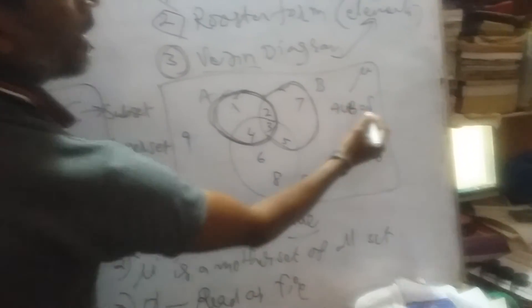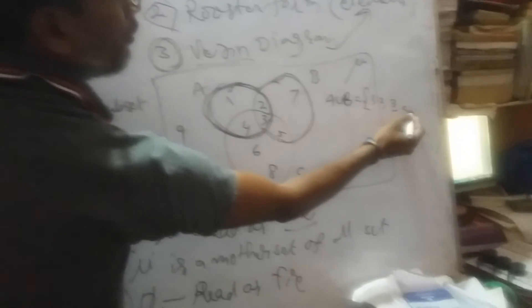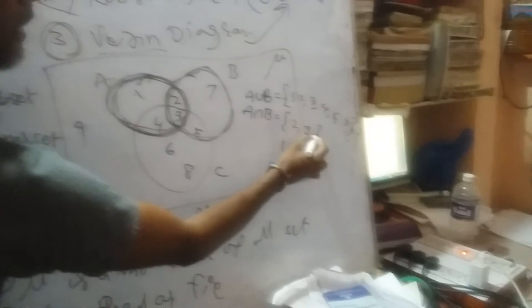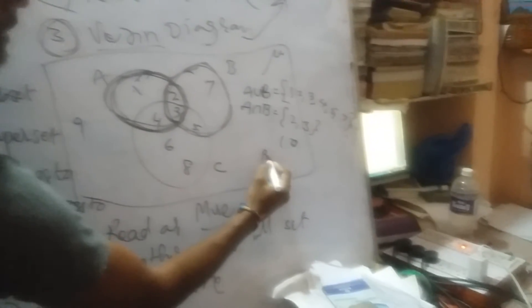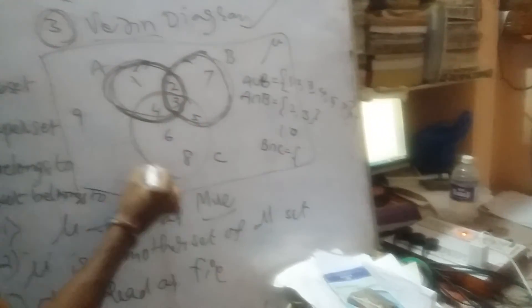A union B means all elements of A and B together: {1, 2, 3, 4, 5, 6, 7}. Set C contains {3, 4, 5, 6, 7, 8}. A intersection B is the common part of A and B — that is {2, 3}. B intersection C gives the common elements of B and C: {3, 5}.